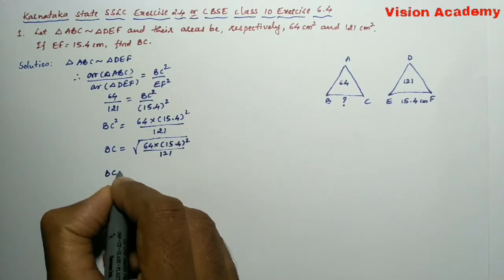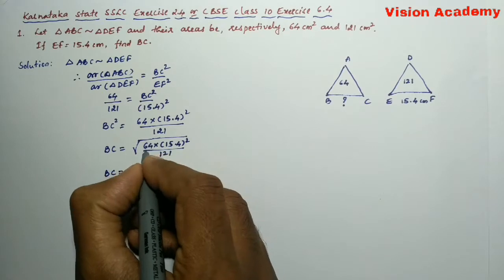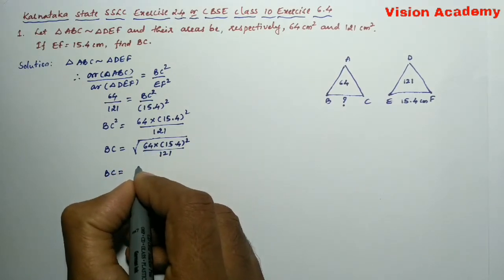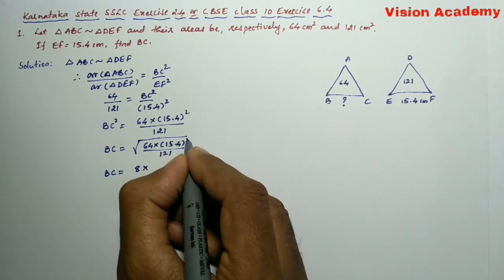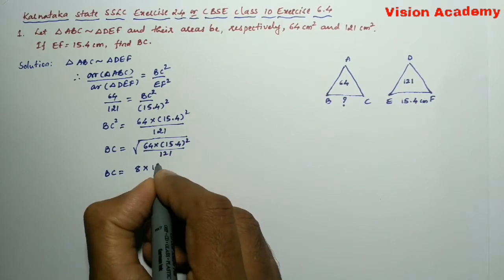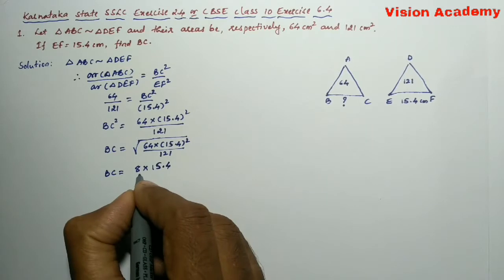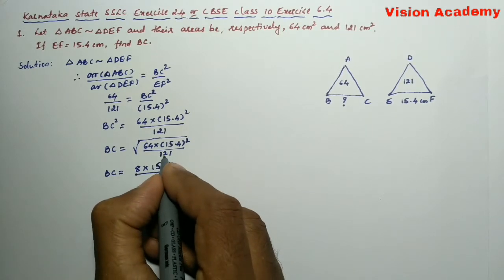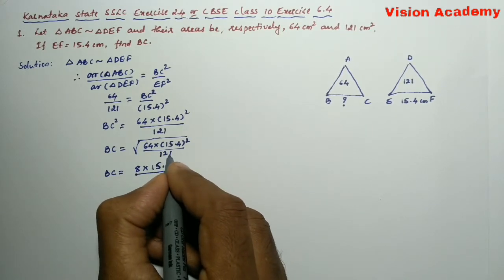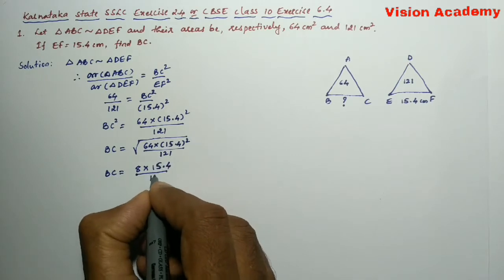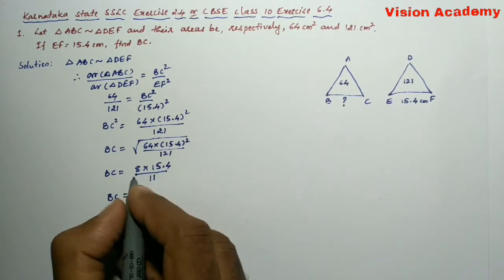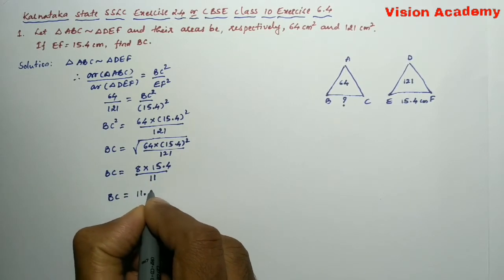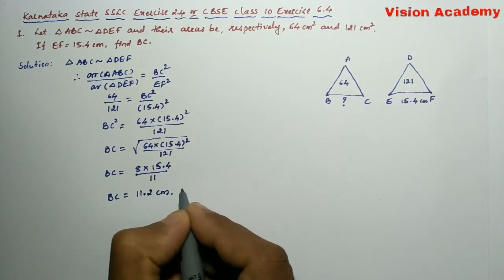BC equals... 64 is the perfect square of 8. The square root and square cancel, leaving 8 times 15.4 divided by 11, since 121 is the perfect square of 11. After simplification we get 11.2 cm.